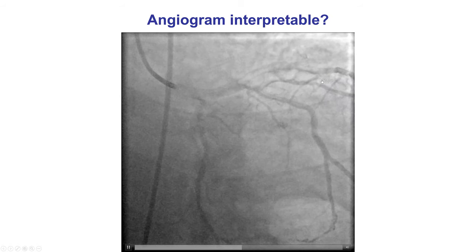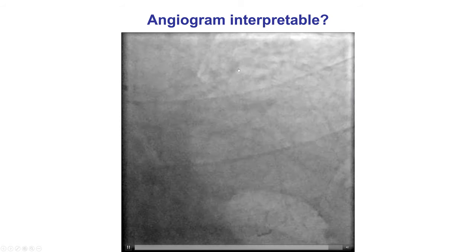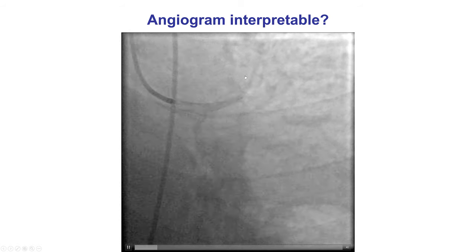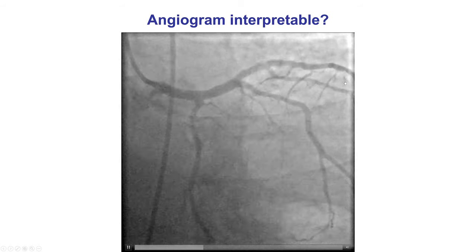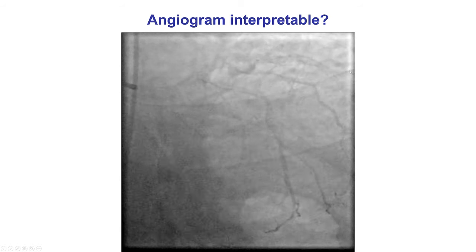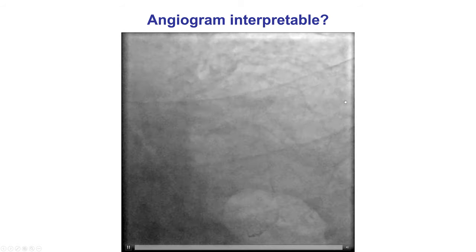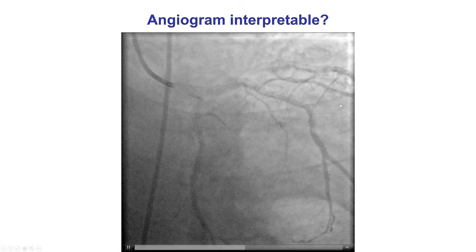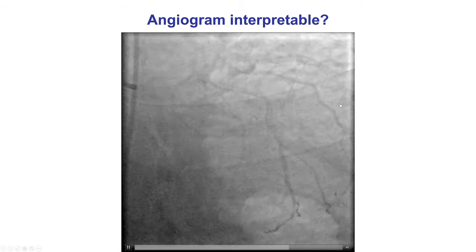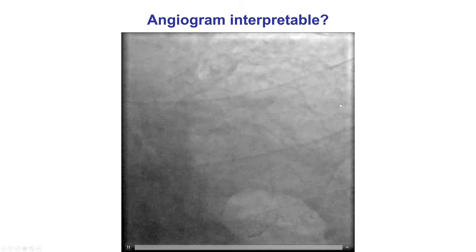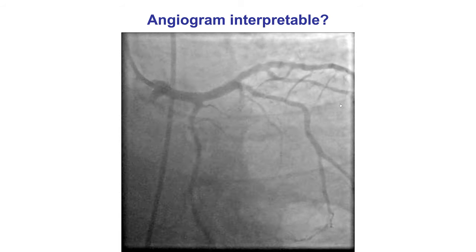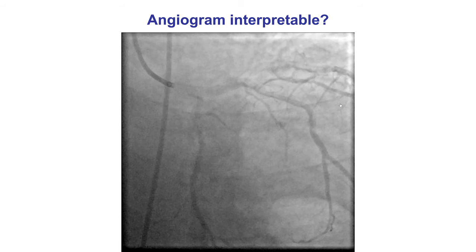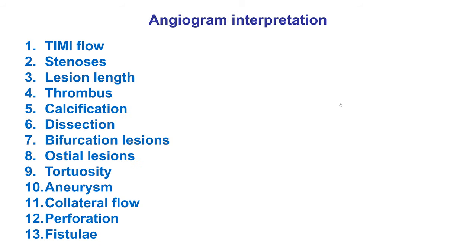Here is an example where the visualization and opacification are poor, and the LAD is cut out, so we cannot provide an assessment of the mid and distal LAD. Moreover, each coronary artery should be assessed in at least two orthogonal projections, which will be discussed in more detail later on.